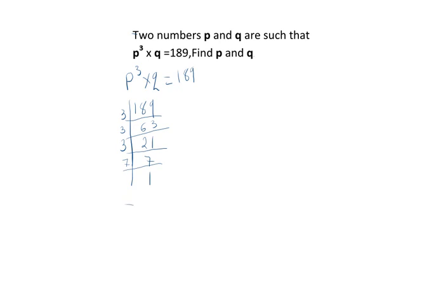this one implies that P³ times Q should be equal to what we have here on this factorization, which is 3³ multiplied by 7. So basically,